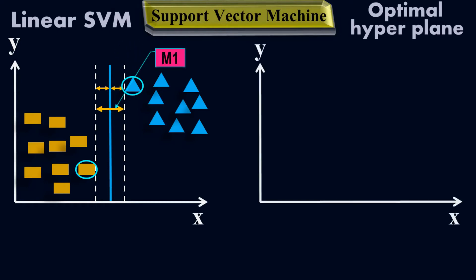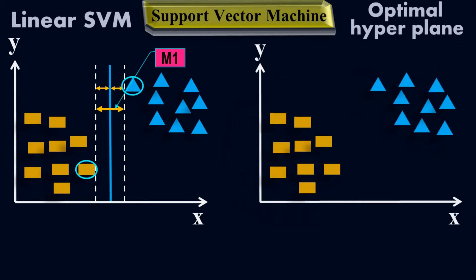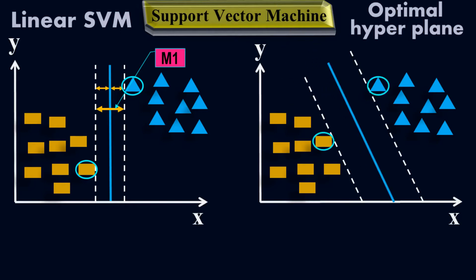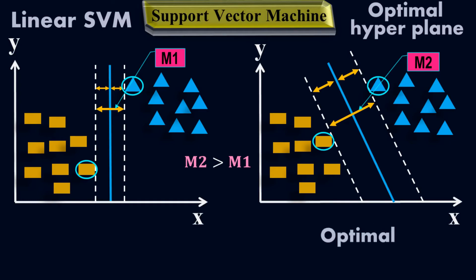Now let me draw another support vector machine model. If I draw the decision boundary in this pattern, this is my hyperplane and these are my support vectors. These are two distances, d-negative and d-positive, and this is my margin m2. It is very clear that m2 is greater than m1. Therefore, the right side is the optimal hyperplane and the left side is not the optimal hyperplane.